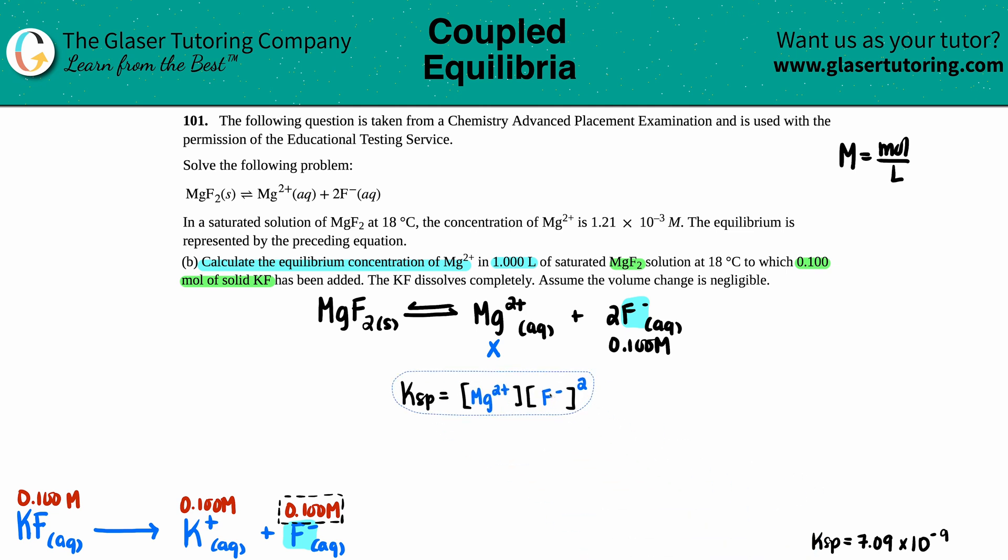Ksp equals Mg2+ times F- raised to the second. We know that the Ksp value we found from part A is 7.09 times 10 to the negative ninth. This equals Mg2+, which is x, times 0.100 squared. I could just do 0.1 squared, which gives 0.01. Then just solve for x.